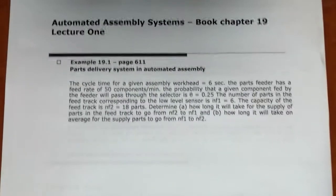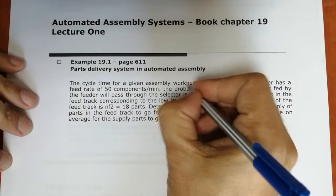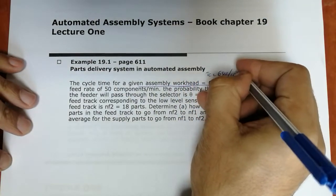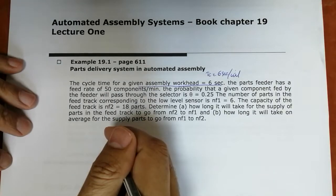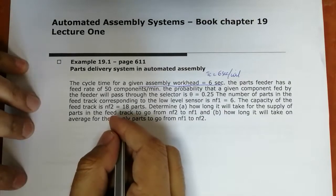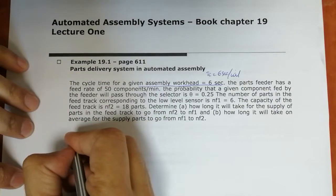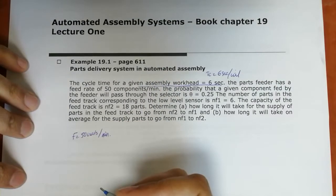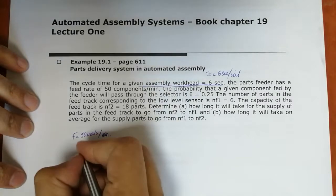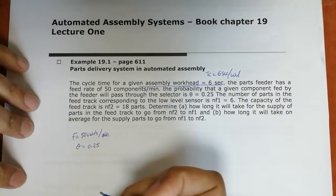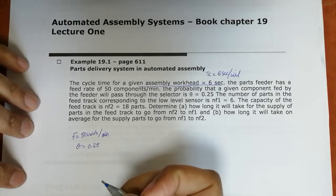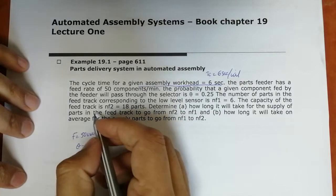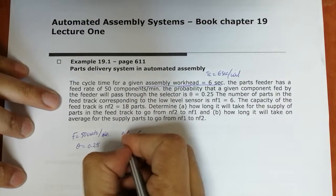Let's do the first example. The cycle time for a given assembly workhead is 6 seconds (TC = 6 s/unit). The parts feeder has a feed rate of F = 50 components per minute. The probability that a given component fed by the feeder will pass through the selector is φ = 0.25. The low-level sensor corresponds to NF1 = 6 parts, and the high-level sensor (capacity of the feeder track) corresponds to NF2 = 18 parts.